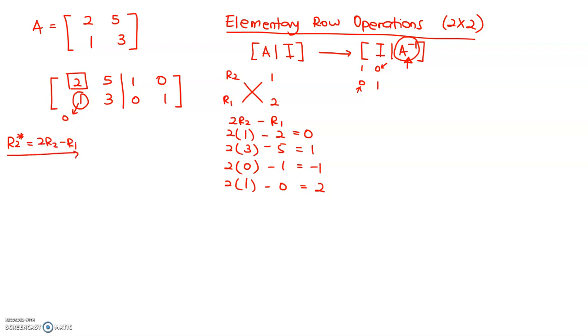I didn't change row 1, so let us keep writing down: 2, 5, 1, 0. Second row is 0, 1, negative 1 and 2.